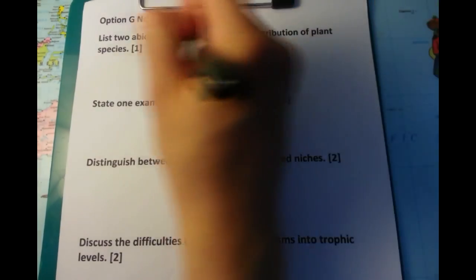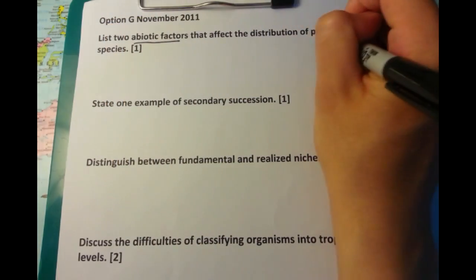Option G paper now. List two abiotic factors that affect the distribution of plant species.